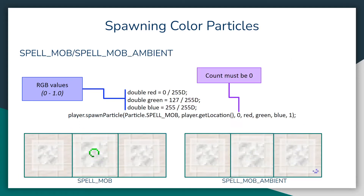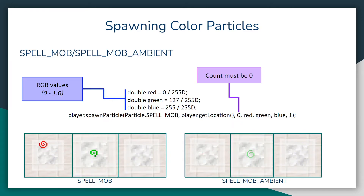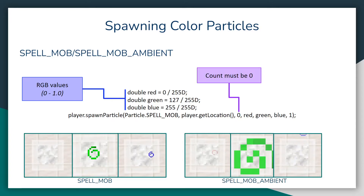We also have the spell mob and spell mob ambient particles. This one works a little differently because instead of creating a DustOptions object, we give it the RGB values directly in the X, Y, and Z offset parameters — where the X offset is the red, the Y offset is the green, and the Z offset is the blue. Instead of being between 0 and 255, it's between 0 and 1. The count still has to be equal to 0, you can only spawn one of these particles at a time, and you also want to include a 1 at the very end of the spawn particle method call as well.